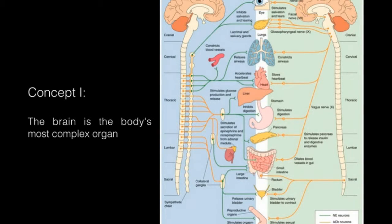Concept number one: the brain is the body's most complex organ. The brain is responsible for regulating the activity of other organs, such as the lungs, heart, liver, and many other organs in the body. Not only is it responsible for regulating those organs, but it's also responsible for integrating information from the outside world, processing that information, and emitting a response. We also have language centers in the brain and centers specialized for emotion, such as the limbic system.